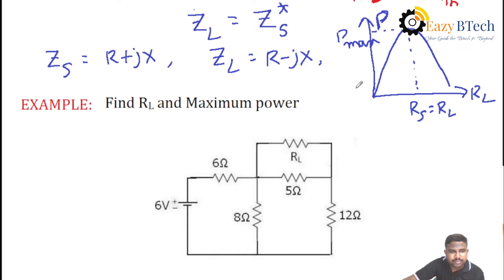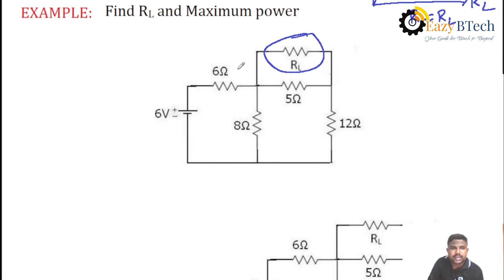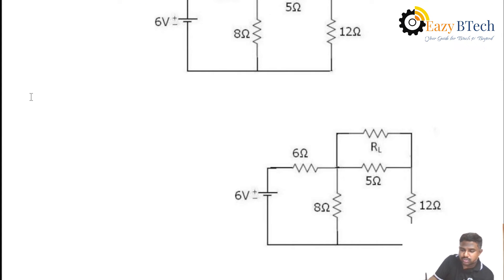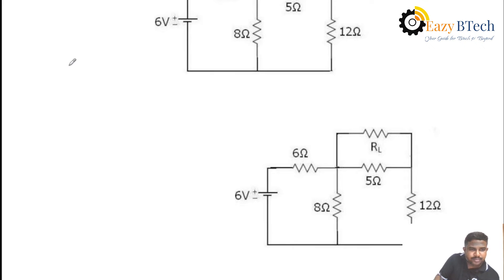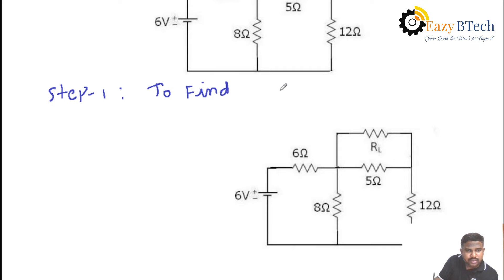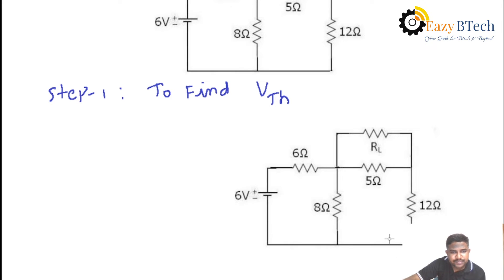We can verify the Maximum Power Transfer Theorem by considering an example circuit. You can apply the Maximum Power Transfer Theorem across the load resistance Rl. After finding Rl value, you can find out the value of maximum power delivered to the load resistance. The first step is to find out the Thevenin circuit. Step 1: find Thevenin's voltage, that is, V-Thevenin. To find Thevenin's voltage, we are finding it across Rl — simply delete the load resistance Rl.